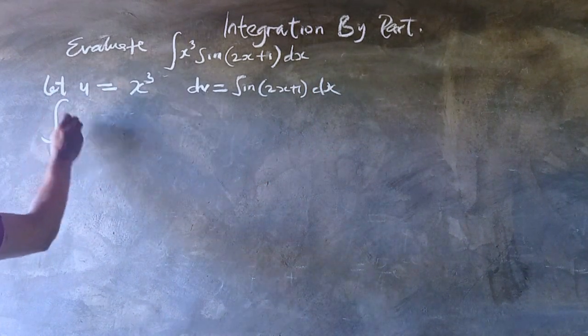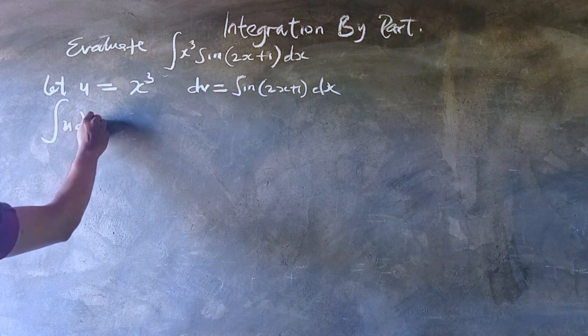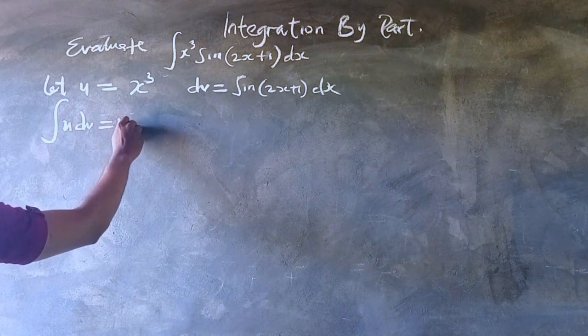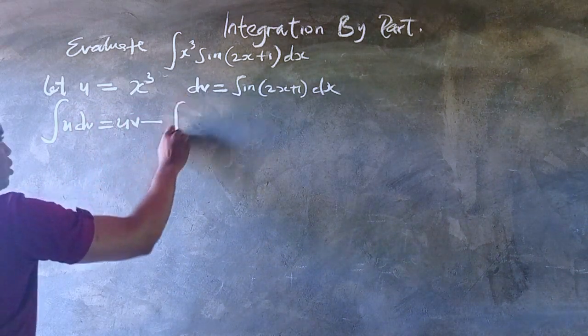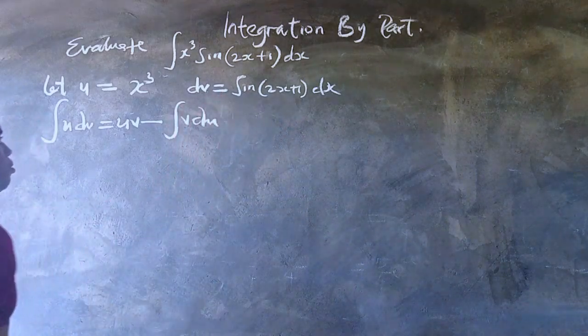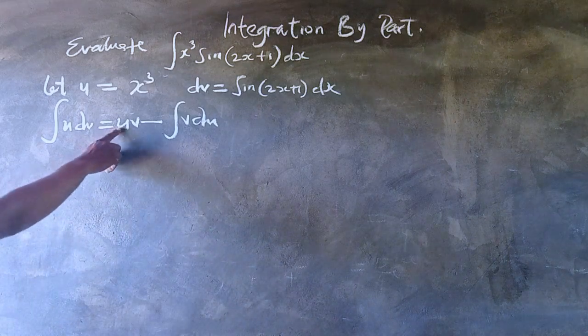I hope you still remember the formula for performing this technique. The integral of u dv equals u times v minus the integral of v du.